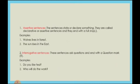Now we will look at assertive sentences. Sentences that state or declare something are called declarative or assertive sentences, and they end with a full stop. Assertive sentences are those sentences which declare something or give some statement. For example, 'Wolf lives in forest' — that is a declarative or assertive sentence because it declares something. 'Sun rises in the east' is also an assertive sentence.